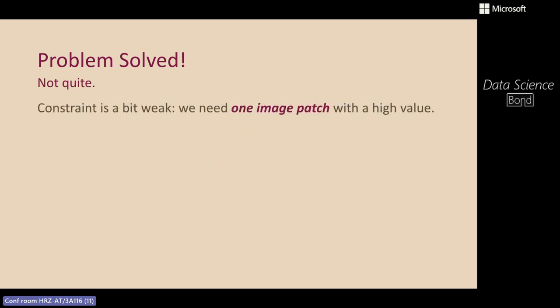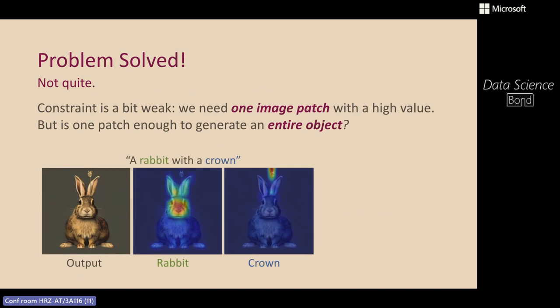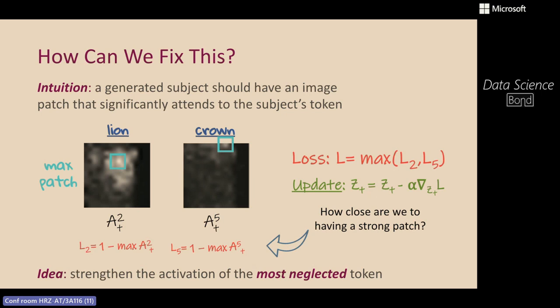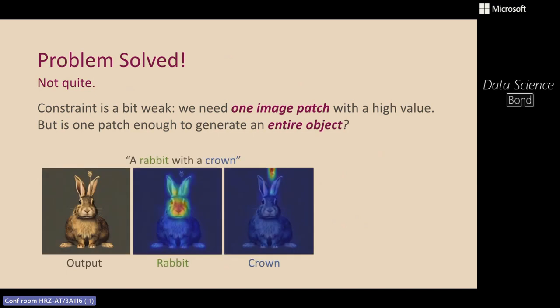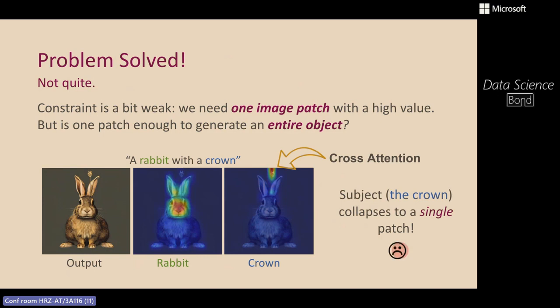Did we solve the problem? We noticed a mode collapse issue: there's a high attention activation for 'crown' in some patch of the image, but our method doesn't enforce that multiple patches have high activation. The model can choose any single patch to assign high activation, leading to a kind of mode collapse — a beginning of a crown appears on the rabbit's head but it's not an actual crown. The loss only enforces generation of a single patch of the subject, not a full generation.